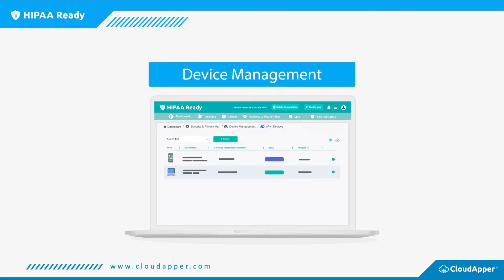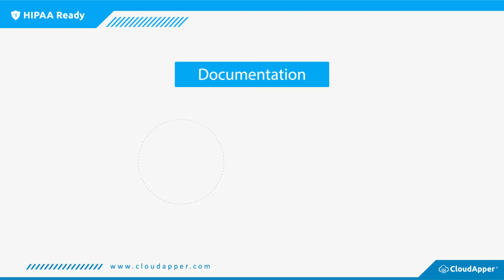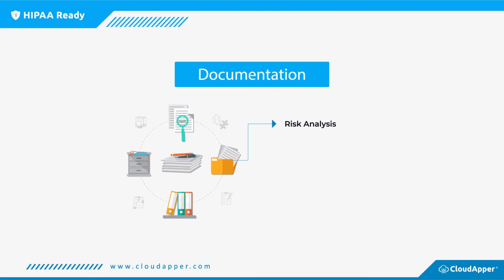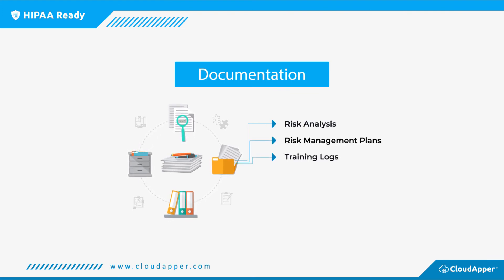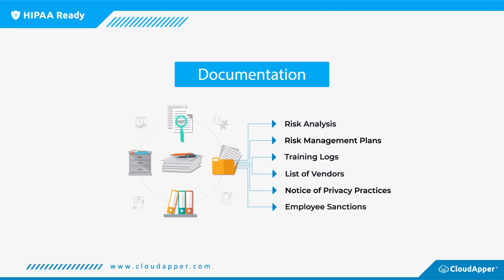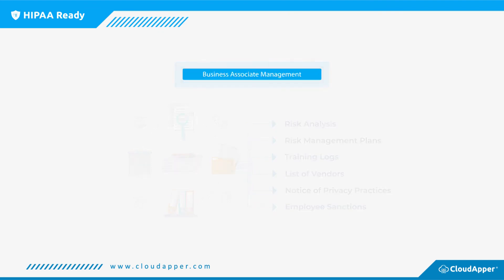If it's not documented, it's not done. HIPAA requires covered entities, business associates, and business associate subcontractors to document risk analysis, risk management plans, training logs, list of vendors, notice of privacy practices, as well as employee sanctions.